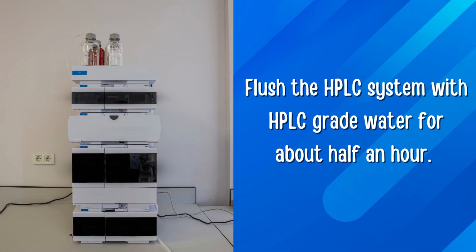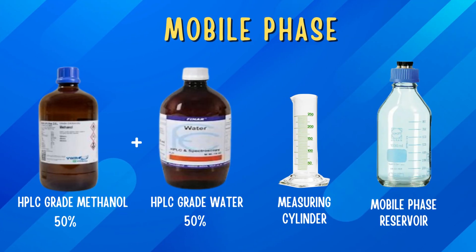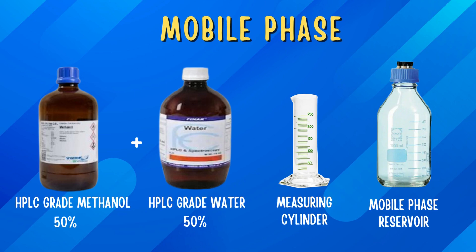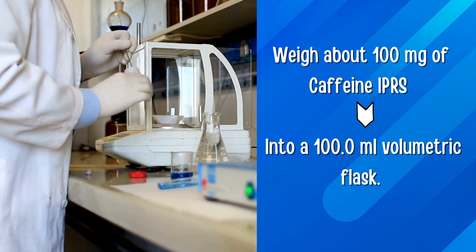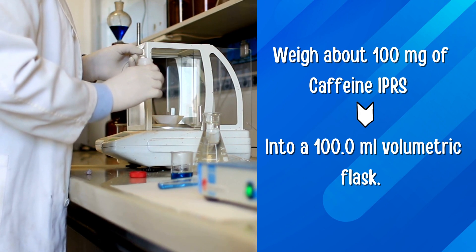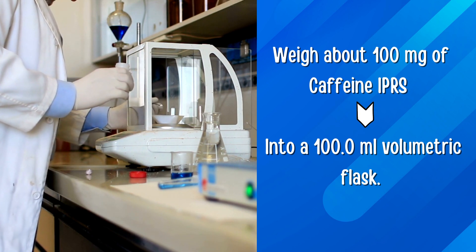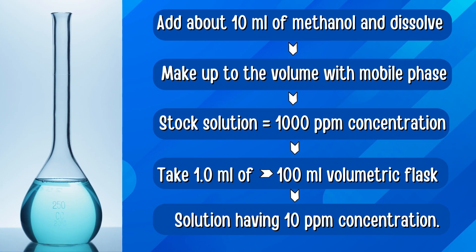Flush the HPLC system with HPLC grade water for about half an hour. Prepare mobile phase by mixing equal volumes of HPLC grade methanol and water in a ratio of 50:50 (v/v) and degas for a few minutes to remove air bubbles. Now accurately weigh about 100 mg of caffeine IPRS using analytical weighing balance into a 100 ml volumetric flask. Add about 10 ml of methanol, dissolve, and make up to volume with mobile phase to get a stock solution of 1000 ppm. Further take 1 ml of this solution into a 100 ml volumetric flask and dilute with mobile phase to get a solution of 10 ppm concentration.